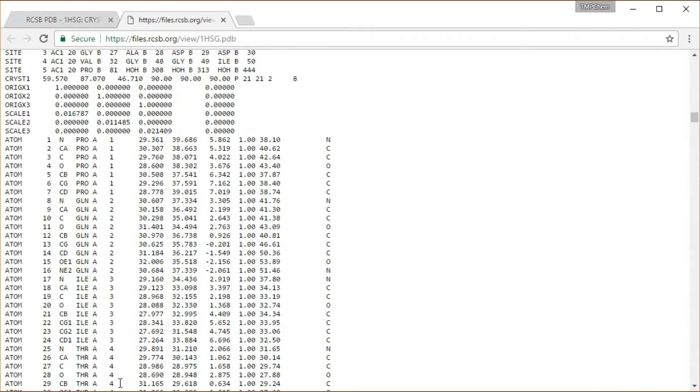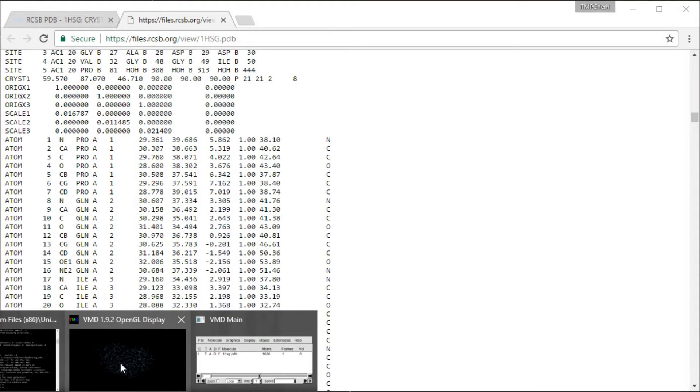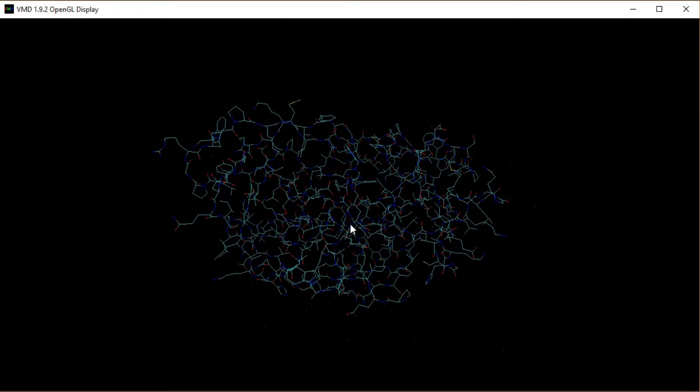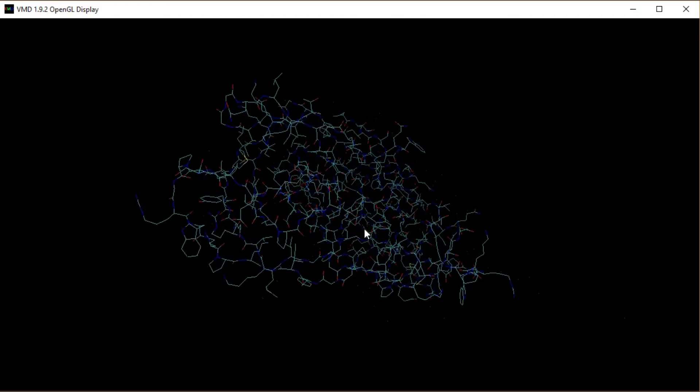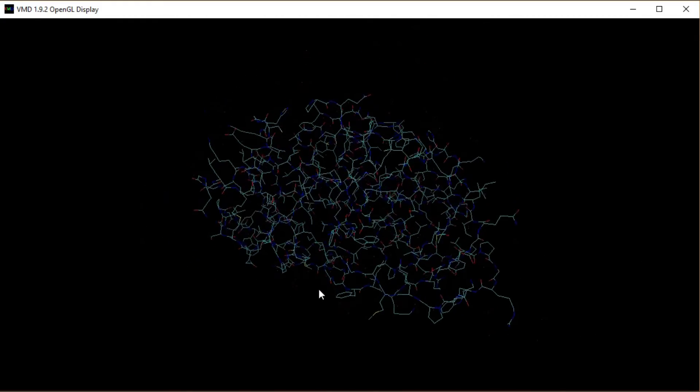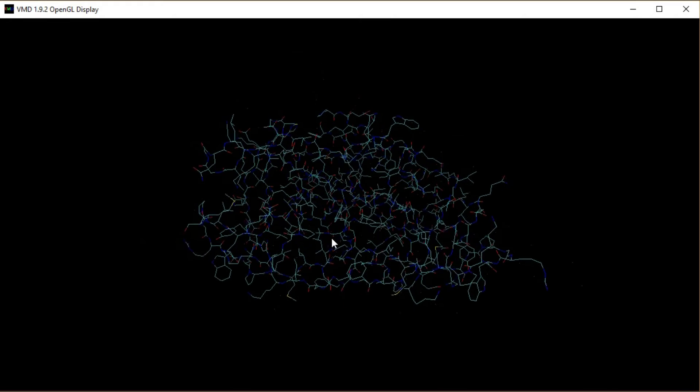This 1HSG, this HIV-2 protease, if I load this on VMD which we discuss in some videos to follow, is a whole protein which looks like this. You can see some side chains there.